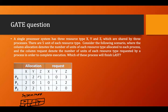Consider the following scenario: the column 'allocation' denotes the number of units of each resource type allocated to each process, and the column 'request' denotes the number of units of each resource type requested by a process in order to complete execution. The question asks which process will finish last, so we'll find the sequence.